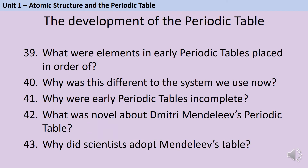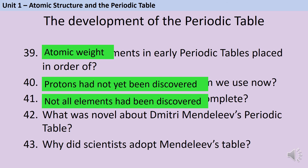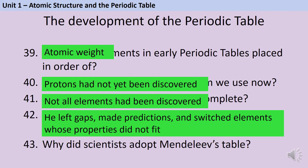Early versions of the periodic table placed elements in order of atomic weight, because atomic number didn't exist as a concept yet — protons hadn't been discovered. Early periodic tables were also missing elements that had not yet been discovered. Dmitry Mendeleev was the first person to leave gaps in the periodic table for elements he thought hadn't been discovered yet, and he made predictions about elements that would fill those gaps. He also switched over some elements that didn't fit the properties of the group they should be placed in. This was solved later when protons and atomic number were discovered, revealing that atomic masses don't always increase in the same order as atomic number. Scientists adopted Mendeleev's table because the predictions he made turned out to be true.